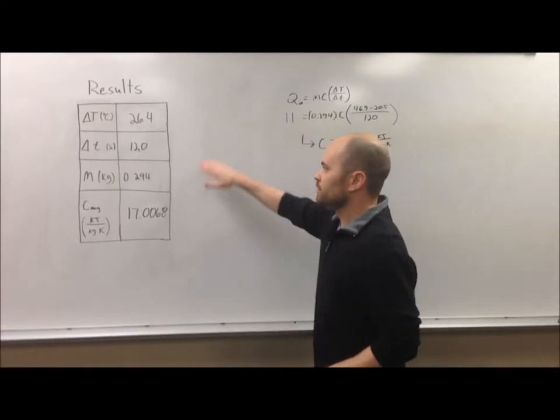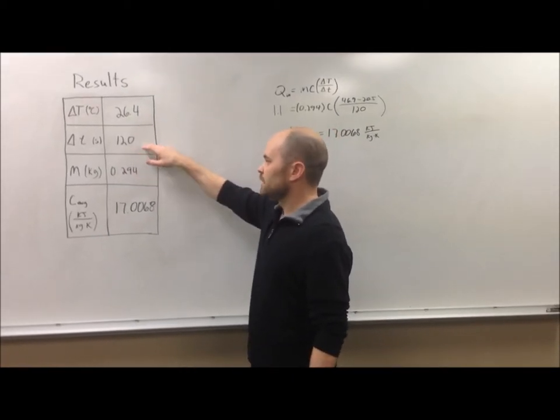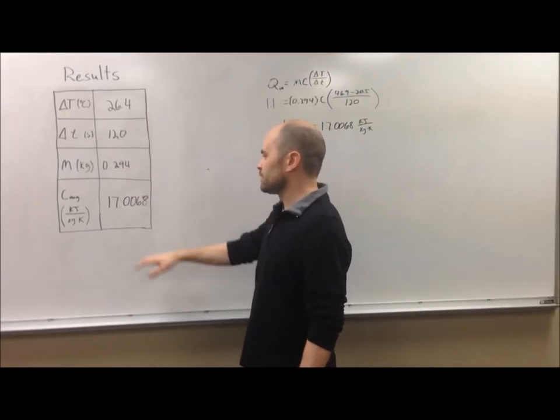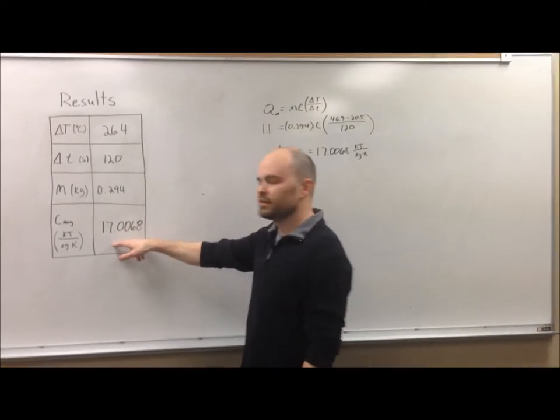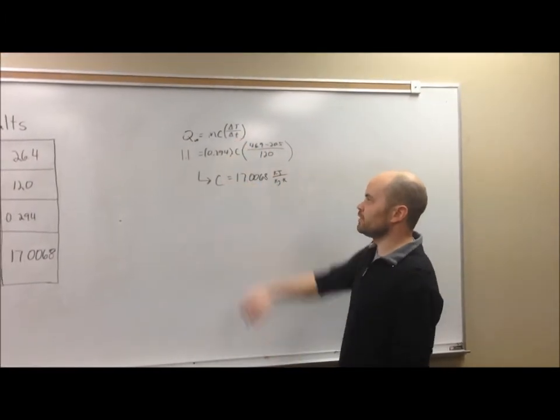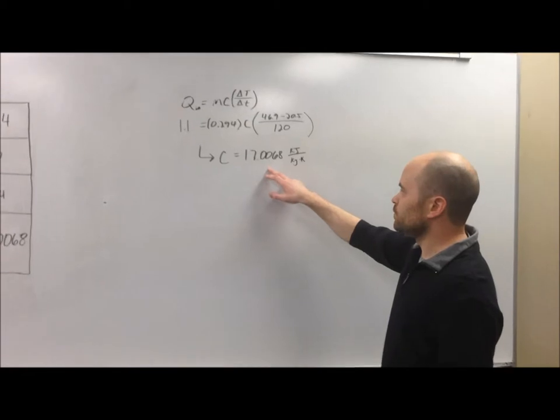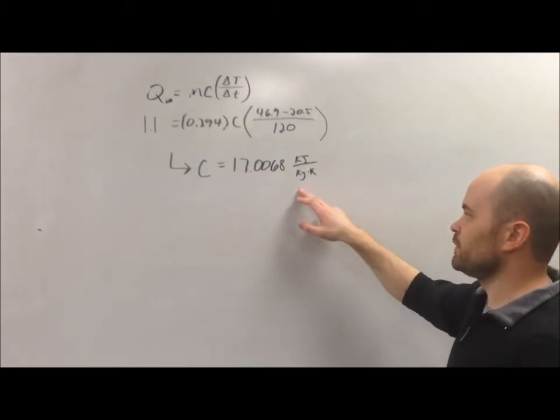Alright, here's our results in this table. We have our three measured values: change in temperature, elapsed time, and mass, and then our calculated value of specific heat. We've plugged our three measured values into our main first law equation, and we came out with a specific heat value of 17.0068 kilojoules per kilogram Kelvin.